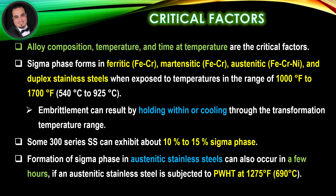Embrittlement can result by holding within or cooling through the transformation temperature range. Some 300 series stainless steels can exhibit about 10% to 15% sigma phase. Formation of sigma phase in austenitic stainless steels can also occur in a few hours if the steel is subjected to post-weld heat treatment at 1275 degrees Fahrenheit.